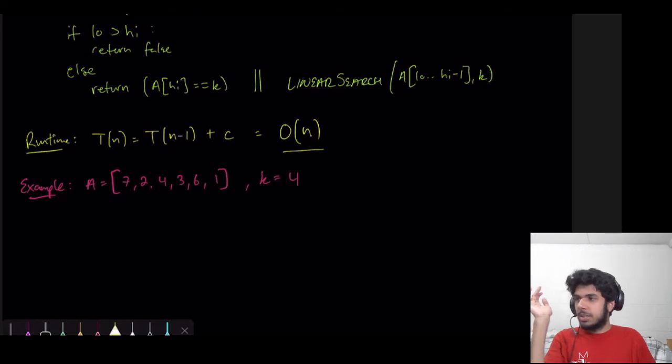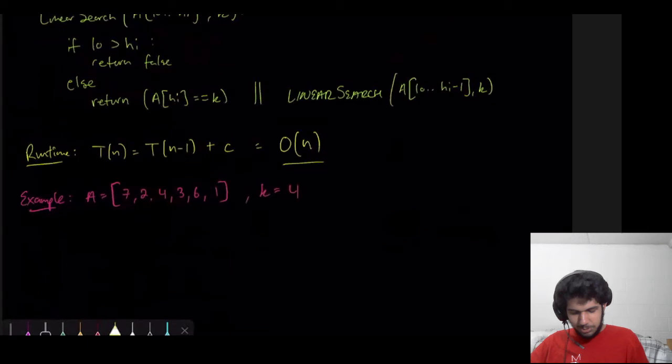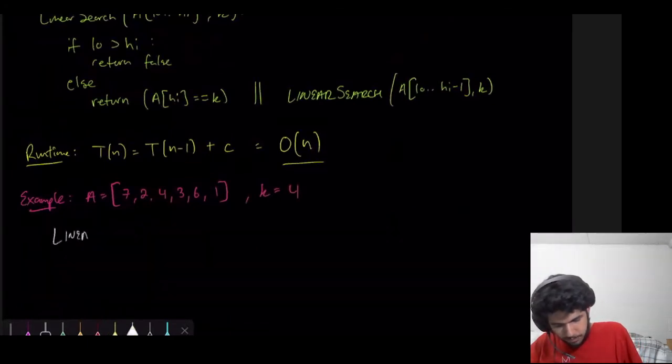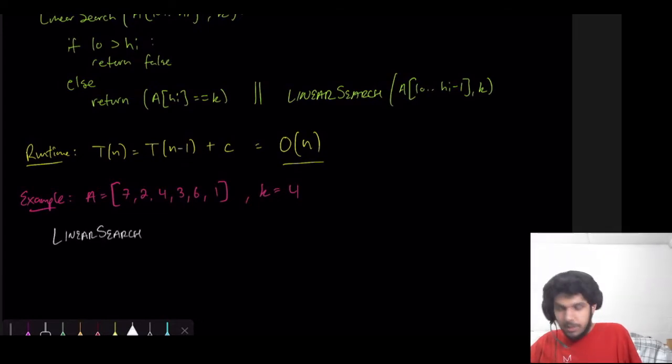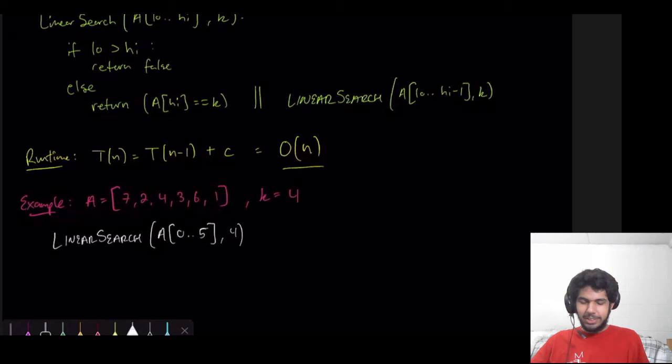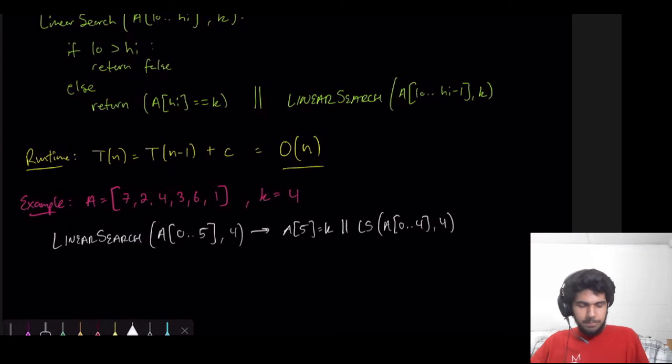So, let's run through an example of what's going on here with an example array. So, what we do is we're going to call linear search, which I'll probably abbreviate as LS eventually, on A, going from indices 0 to 5. So, right now we want all of the elements of our array. We're looking at the entire thing. This is index 0, 1, 2, 3, 4, 5. So, 0 to 5. And then our key is 4. So, first we check, is low greater than high? It's not. So, we don't return false. So, that means we check if A of high equals K or linear search on the rest. So, this will lead us to A of 5 equal to K or linear search of A of 0 to 4 now, comma 4.